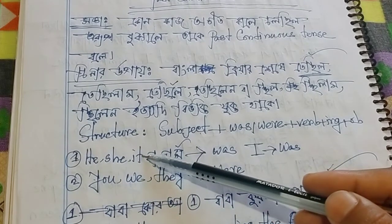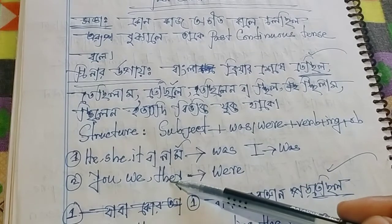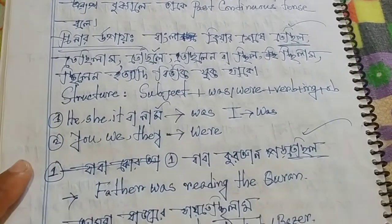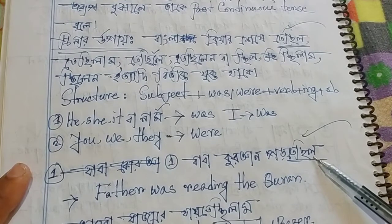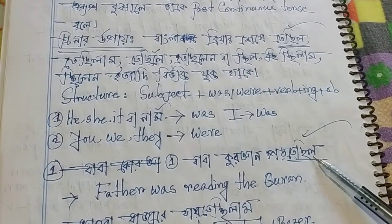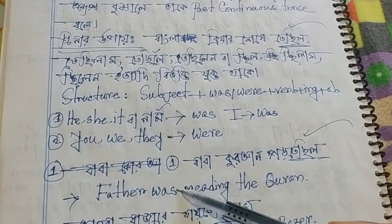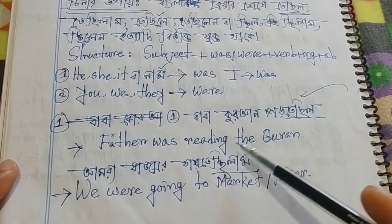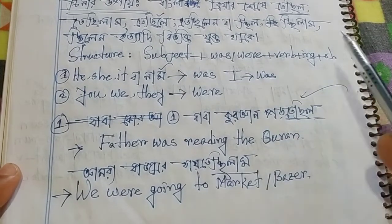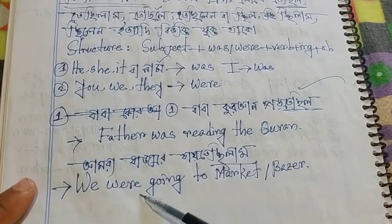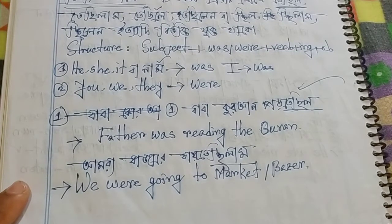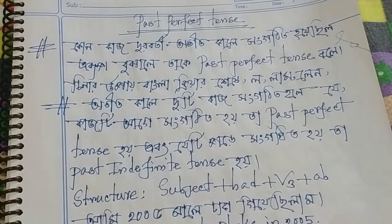He, she, it — use was. You, we, they — use were. For example: We were going to the market or bazaar. We were going to the market. This leads us to the Past Perfect Tense.